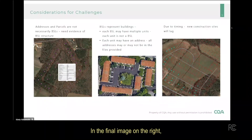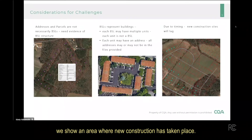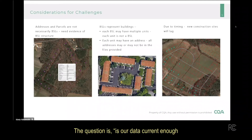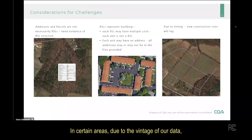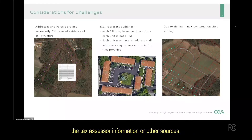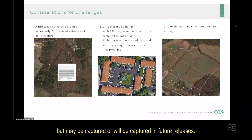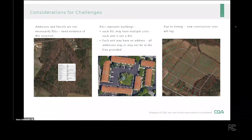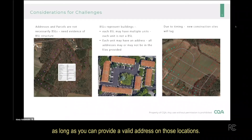In the final image on the right, we show an area where new construction has taken place. In this version of the fabric, we are able to identify BSLs in the area. The question is whether our data is current enough to have captured all completed new construction. In certain areas, due to the vintage of our data — whether the aerial photography, the tax assessor information, or other sources — that new construction may not be captured in the current version, but may be captured in future releases. If you have access to more current information in these areas, we would welcome them as BSL challenges, as long as you can provide a valid address for those locations.